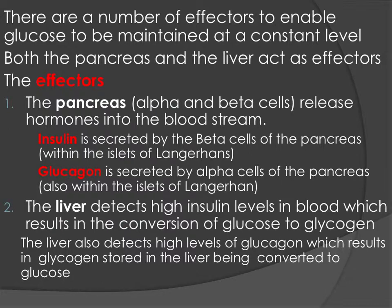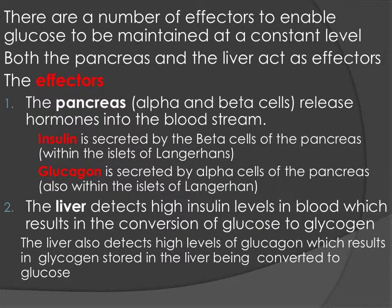Rather than being the cells themselves, the effectors are more to do with the hormones being released, and the effector will also be the final endpoint those hormones bring about — that's going to be the liver. Insulin is secreted by beta cells, so insulin is the effector, and glucagon is secreted by alpha cells, making it the alternative effector, depending on whether blood glucose is increasing or decreasing. The liver has insulin receptors, so the liver is also part of the effector — it can convert glucose to glycogen to store glucose, or convert glycogen back to glucose and release it to raise blood glucose levels.